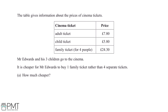The table gives information about the prices of cinema tickets. Mr Edwards and his three children go to the cinema. It is cheaper for Mr Edwards to buy one family ticket rather than four separate tickets. How much cheaper?